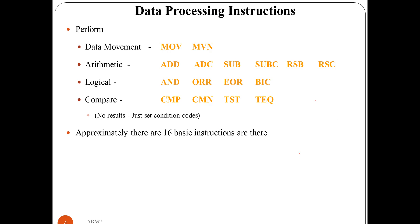In data processing instructions we have these categories. First is data movement — whenever we have to transfer data from one register to another, we use those two instructions. Next is arithmetic instructions for addition and subtraction. Then logical instructions: AND, OR, XOR, bit clear. Then compare instructions for comparing different numbers. Please note: in compare instructions no result is generated — only the conditional flags in the CPSR register are updated. There are 16 basic instructions in total.